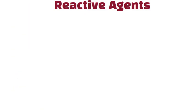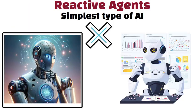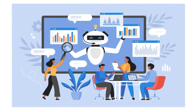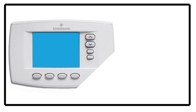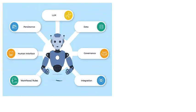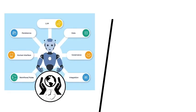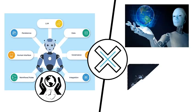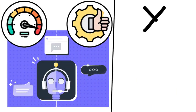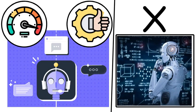Reactive agents are the simplest type of AI. They do not think ahead or plan. Instead, they simply react to what is happening around them right now. Imagine a basic thermostat that turns the heater on when the room is cold and off when it is warm. These agents work by following set rules based on the current environment, without keeping track of past events or predicting the future. Their actions are immediate responses, making them very fast and reliable in situations that do not require complex decision-making.